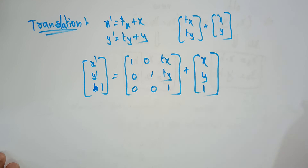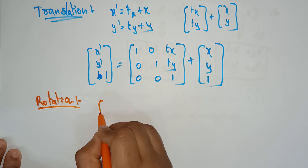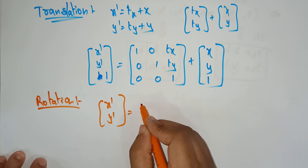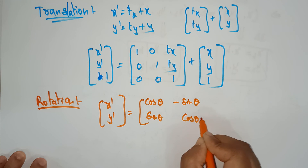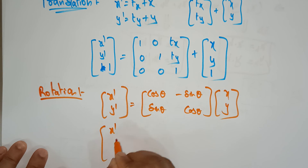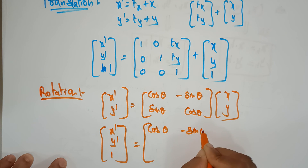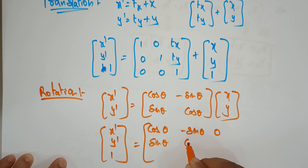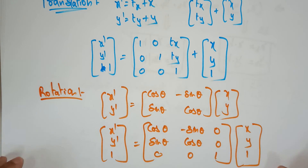Now let's look at rotation. The general formula without homogeneous coordinates is [X', Y'] = [cosθ, −sinθ; sinθ, cosθ] × [X, Y]. Adding the homogeneous coordinate and converting from a 2-vector to a 3-vector, the matrix representation becomes: [cosθ, −sinθ, 0; sinθ, cosθ, 0; 0, 0, 1] multiplied by [X, Y, 1]. This is the formula for rotation.